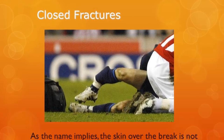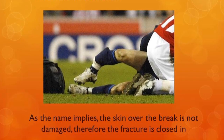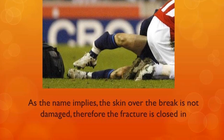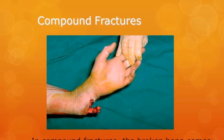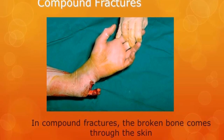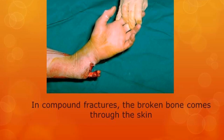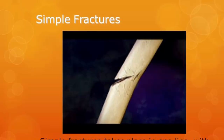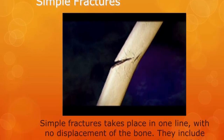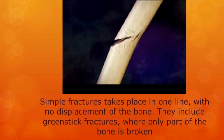A closed fracture is where the skin over the break is not damaged — the fracture is underneath the skin. A compound fracture is where a broken bone comes through the skin and is visible to anyone nearby. A simple fracture takes place in one line with no displacement of any of the bone, and includes things like green stick fractures, where only part of the bone is broken.